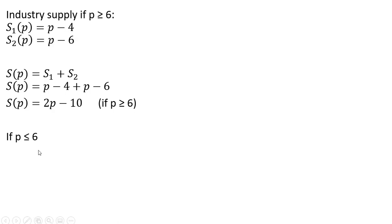And if price is less than 6, the only firm in this market bringing a quantity to the market will be Firm 1. And so the industry supply curve at a price less than or equal to $6 will just be represented by Firm 1's supply equation.